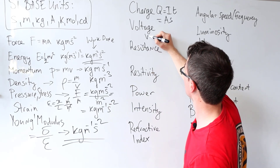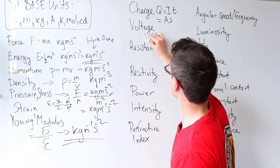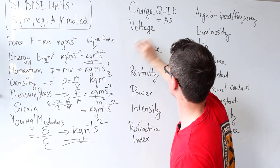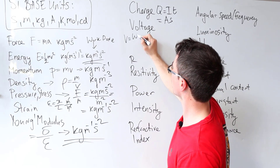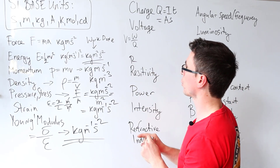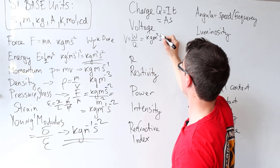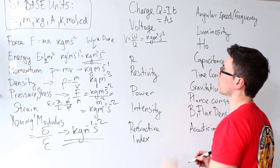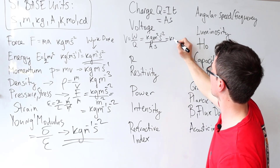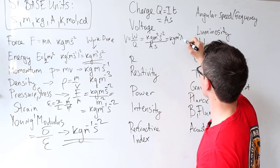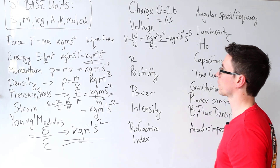Voltage — V is equal to the amount of energy per unit charge. The base unit of energy was kg m² s⁻². We divide that by the base unit for charge, which is amp seconds. What's left is kilograms meters squared, A to the power of minus one, and s to the power of minus two divided by s gives s to the power of minus three.